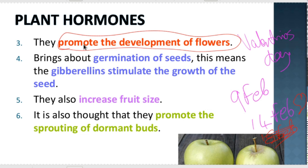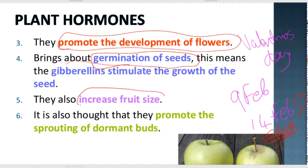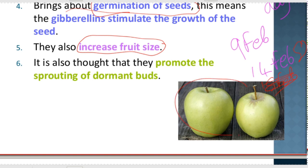We're also going to talk about abscisic acid, which also helps with that. Gibberellins also bring about the germination of seeds, and you'll see that abscisic acid does the opposite — it actually keeps the seeds from germinating and keeps them in dormancy. Gibberellins stimulate the growth of seeds, they also increase the fruit size as we saw from the previous picture, and it is also thought that they promote the sprouting of dormant buds.